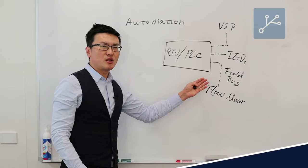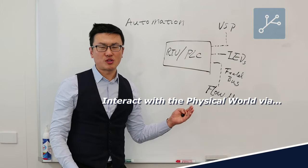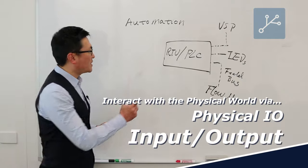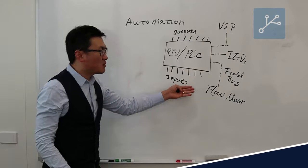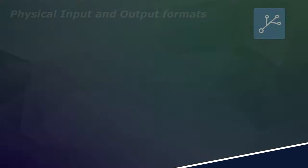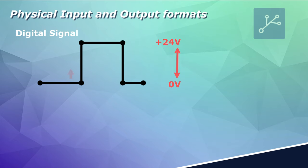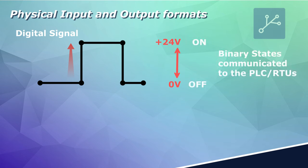A PLC and RTU can also interact with the physical world through physical I/O, which is input and output. And those input and output signals usually can be connected in different formats. For example, the input can be 0 to 24 volts. When the voltage reaches to a certain level close to 24 volts, that will generate an on and off signal to the PLC or RTU.